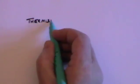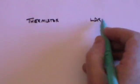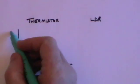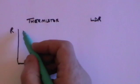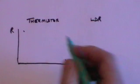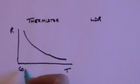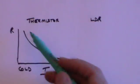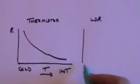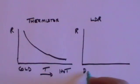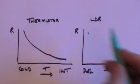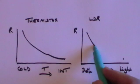In an earlier video in this series on GCSE electricity, we came across two components: one called a thermistor and another called a light dependent resistor. In each case the resistance of these components varies. For the thermistor, the resistance varies with temperature — high resistance when it's cold, low resistance when it's hot. The light dependent resistor is similar: high resistance when it's dark, and low resistance when it's light.